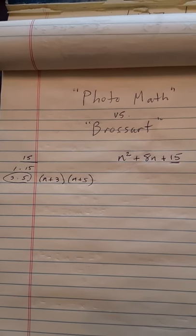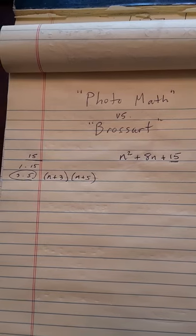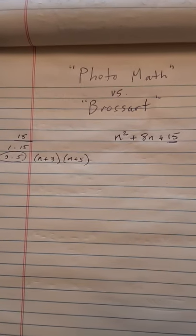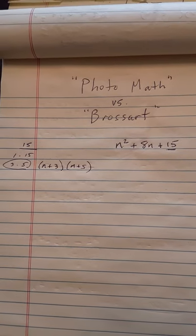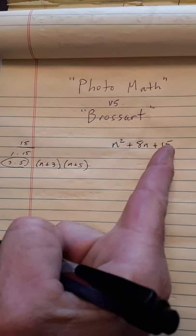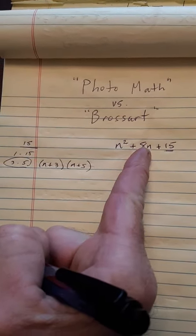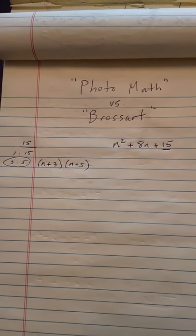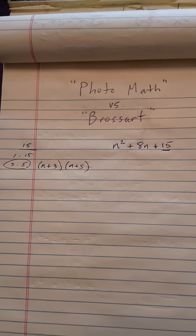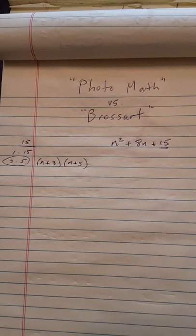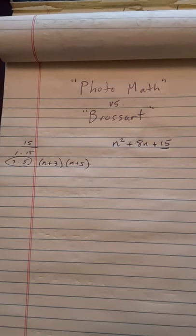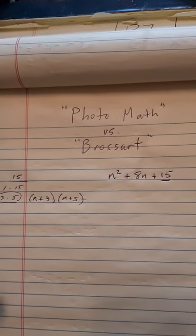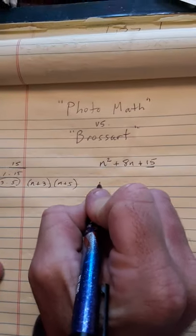But here's what Photo Math is teaching you, which is a little odd. I asked you to look at the 15 and consider the relationship between its factors and 8. Photo Math is asking you to look at 8n and asking you, what's the relationship of things that add up to 8 that multiply to 15?